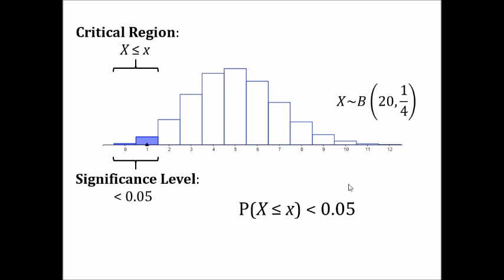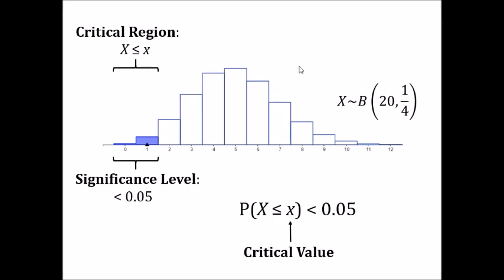Hopefully you recognise that with this distribution and this sort of problem we can use our calculator to work out the answer. The highest value in the critical region is called the critical value. So what we need to do is use our calculator to find the value of x where the probability that x is less than or equal to that value is less than 0.05.